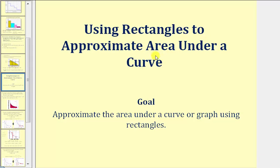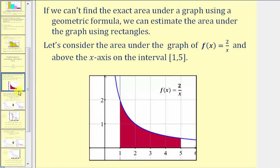Welcome to a lesson on using rectangles to approximate the area under a curve or under a graph. If we can't find the exact area under a graph using a geometric formula, we can estimate the area under the graph using rectangles. Let's consider the area under the graph of f of x equals two divided by x and above the x-axis on the closed interval from one to five. Notice how we don't have a geometric formula that's going to give us this area, but we can approximate it using rectangles.